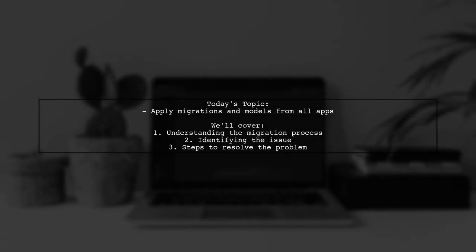Welcome to our Django tutorial. Today we're tackling a question that many developers encounter when working with multiple apps in a project. Our viewer is facing an issue with applying migrations across different apps. Specifically, they have a project structure with a main app and a secondary app, but when they run the migration command, only the main app's tables are being created. Let's dive into the details of this problem and explore how to ensure all migrations are applied correctly.